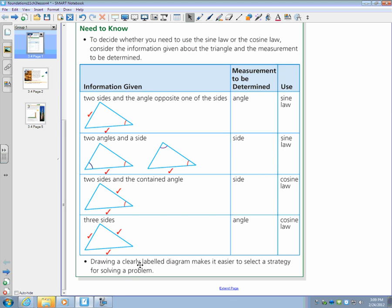The other thing that's important here is a clearly labeled diagram makes it easier to select a strategy for solving a problem. I've actually made it essential that you do diagrams. The other thing I want to review with you is angle of depression and angle of elevation. Angle of elevation means I'm going from straight up and down, and I have an angle of elevation. Angle of depression means looking straight ahead and then going down.